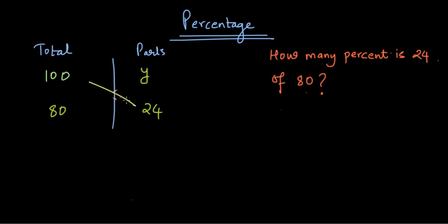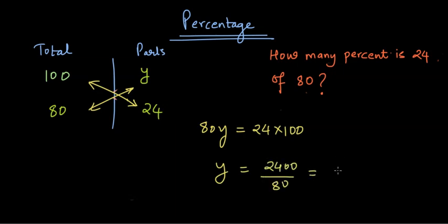And now we will do cross multiplication again. So we multiply 80 with y, so 80y is equal to 24 times 100. And to solve for y, we get 2400 divided by 80 and that is 30. Because y is in the hundreds row, we need to remember that it is percentage. And therefore, because y is 30, we can say that 24 is 30% of 80.